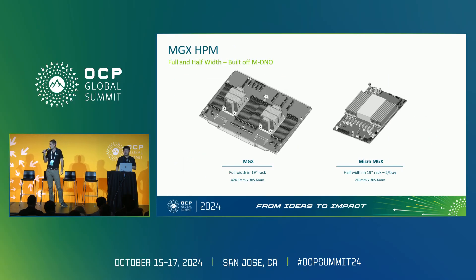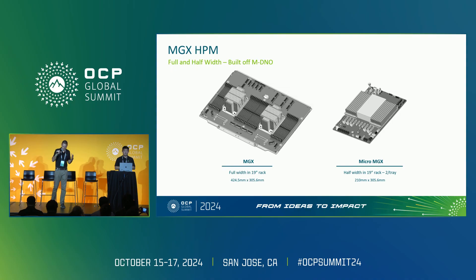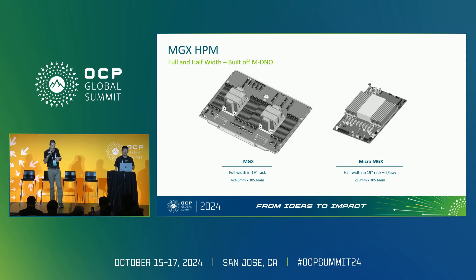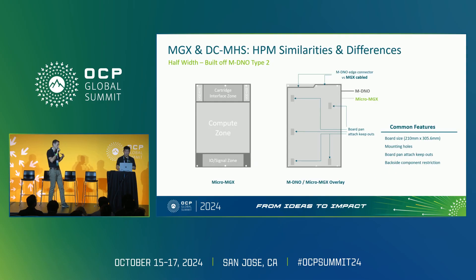Within the HPM zone we can support two form factors of boards: the full width MGX form factor, and the micro MGX — half width form factor. The micro MGX is sized so you can drop two in the same footprint of a full size MGX. They're both designed to operate within the 19-inch form factor. Most importantly, both are built off of the MDNO form factor within OCP, with comparisons of similarities and differences where we've made changes for the accelerated computing application.